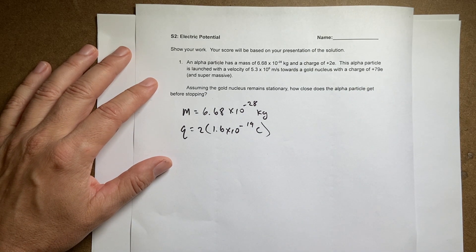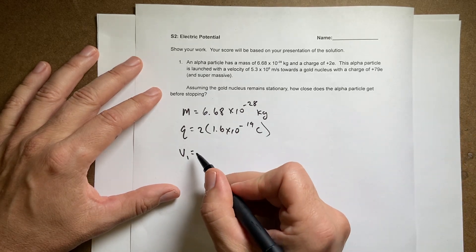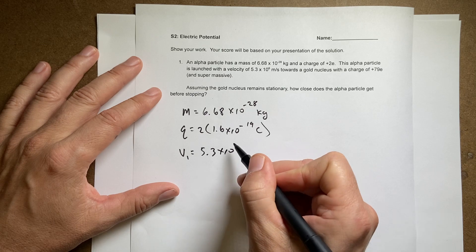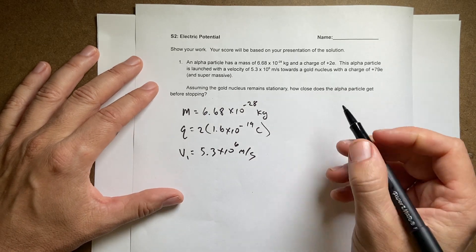e is the charge on an electron. It has an initial velocity v1 in the x-direction of 5.3 times 10 to the 6th meters per second and it's headed towards a gold nucleus.